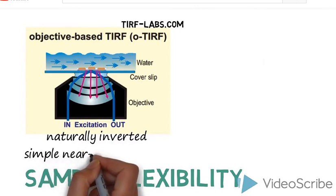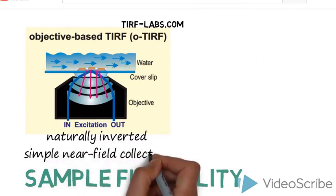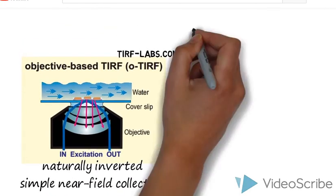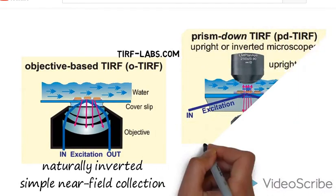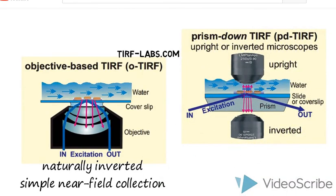P-TIRF, on the other hand, has the evanescent wave generating on the opposite side of the sample, away from the objective. This means that the fluorescent signal needs to pass through the bulk of the sample to reach the objective.